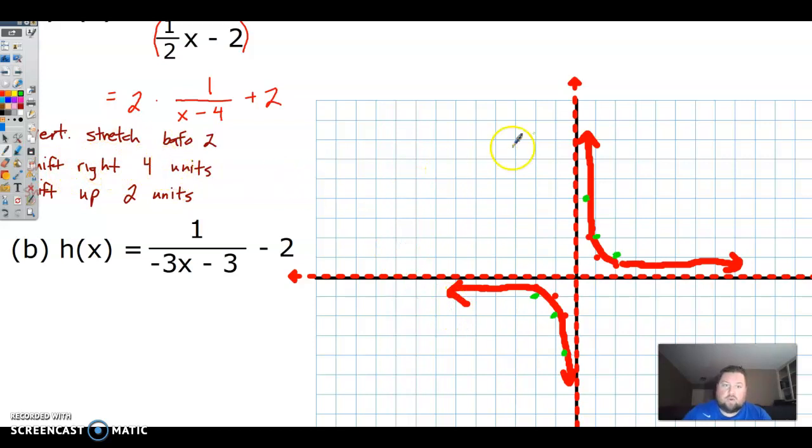So I'm gonna go right four, so my vertical asymptote one, two, three, four is now here. And my horizontal asymptote is going to go up two, so that's going to be here.